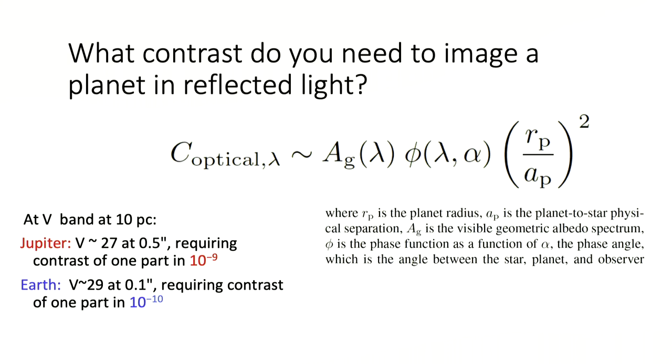The second issue — and the harder one — is the contrast you need. Stars are very bright, planets comparatively very faint. Looking at Jupiter from 10 parsecs away, it's going to have a V magnitude of about 27, about 0.5 arc seconds away, and you need a contrast of one part in 10^9. You need to do about 100 times better to image the Earth — a contrast of 10^-10 at 0.1 arc seconds. This is not something we can do yet.